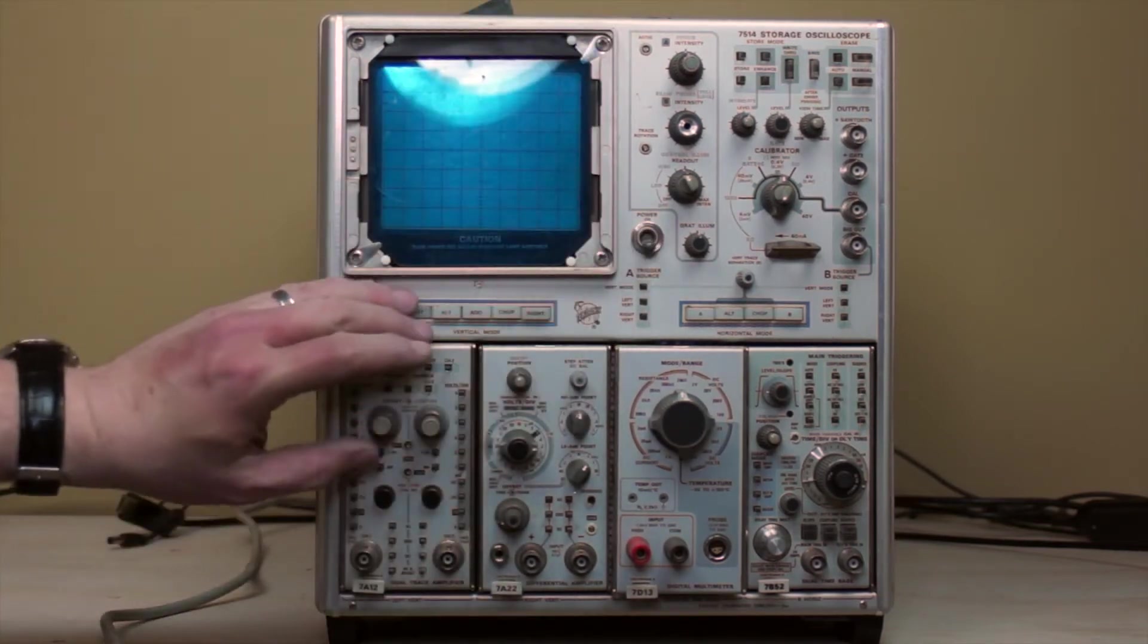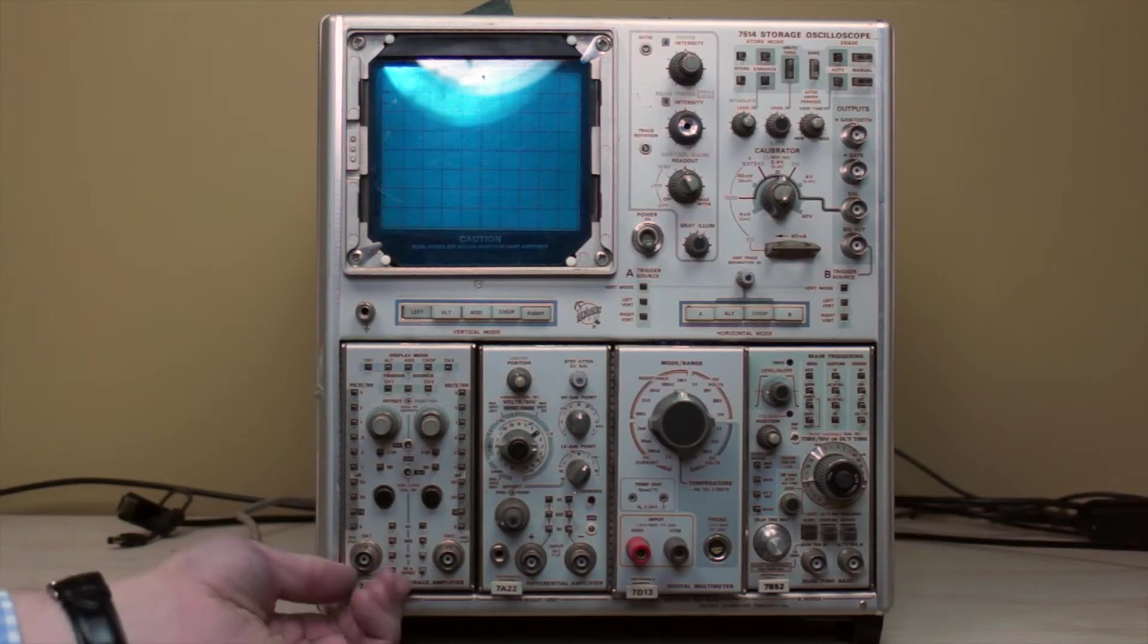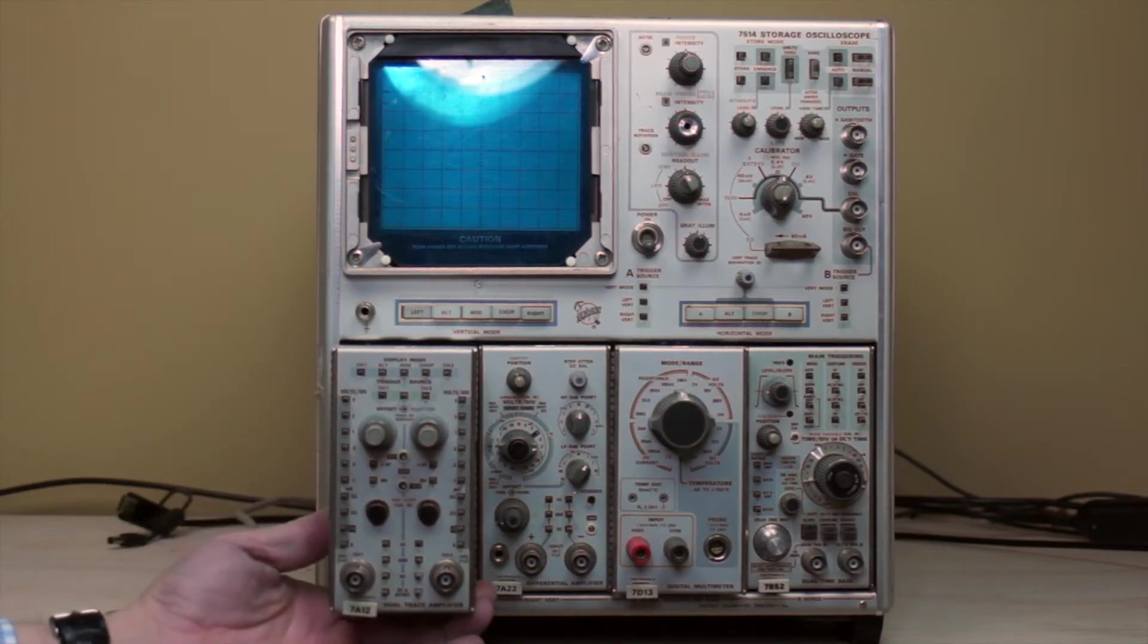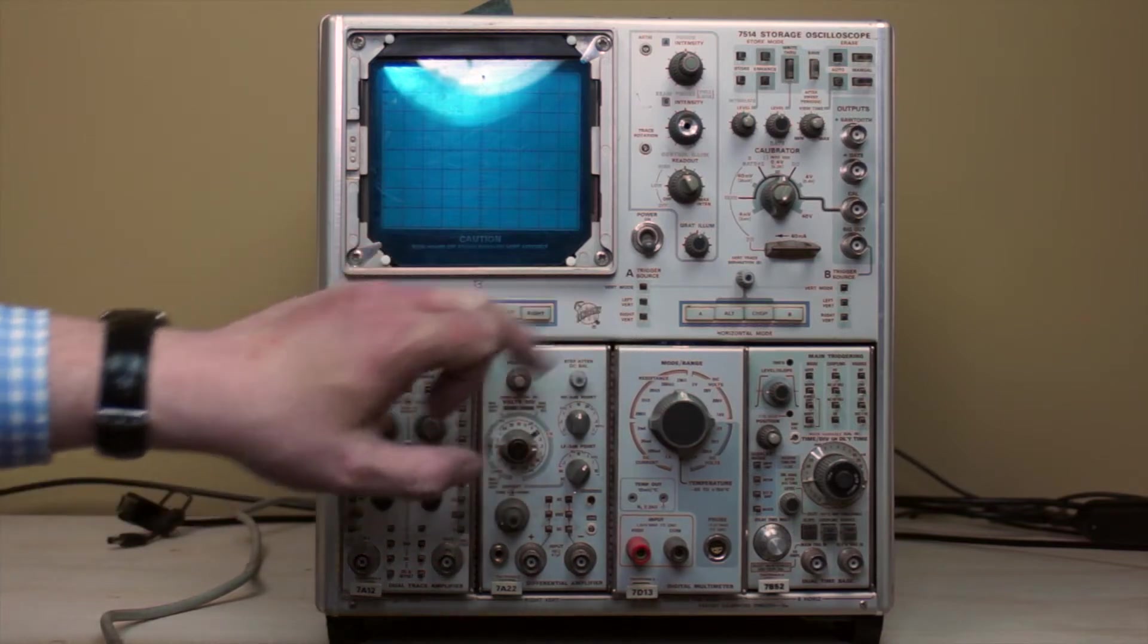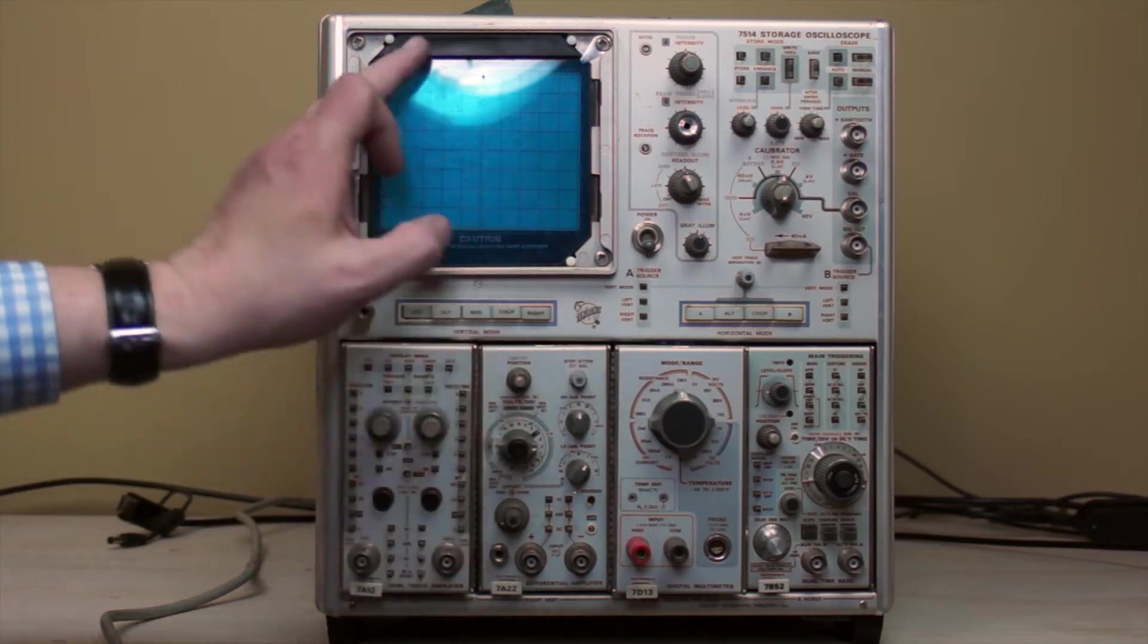The unit itself is a mainframe with plugins. You can get these 7000 series plugins to do different functions. The mainframe is more or less just an oscilloscope display, but the 7415 has the storage function to store waveforms. It also has a character generation system, which for 1969 is really cool. There's actually a set of chips that will generate characters and display information on the screen.